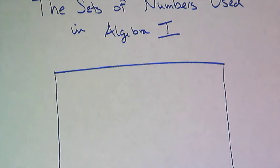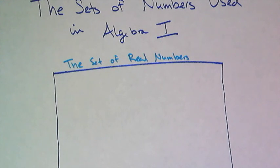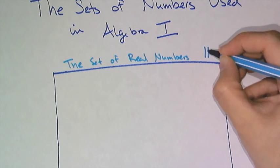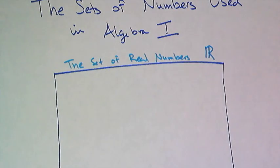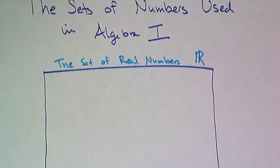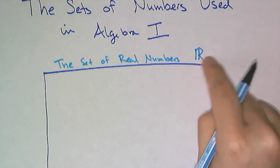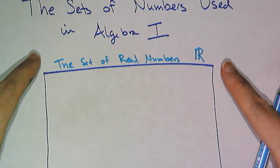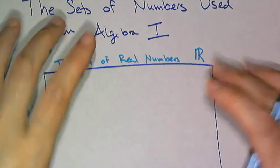The primary set of numbers used in Algebra 1 is a set called the real numbers. Now whenever we want to refer to the set of real numbers, we say the set of real numbers, but we usually write this symbol. It's a capital R with an extra vertical bar, and that symbol is the symbol used to denote the set of real numbers. So whenever you see that, we're talking about the entire set of real numbers. And I will be using this rectangle to denote the set of real numbers.